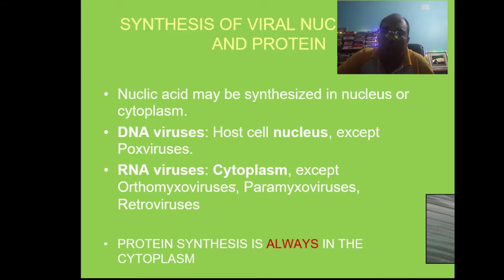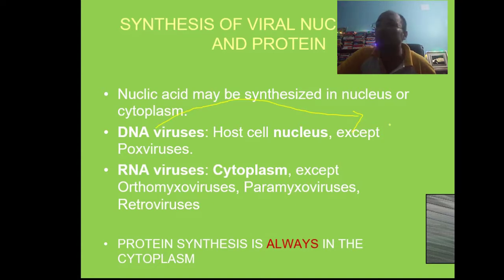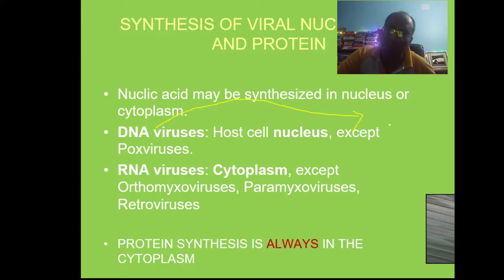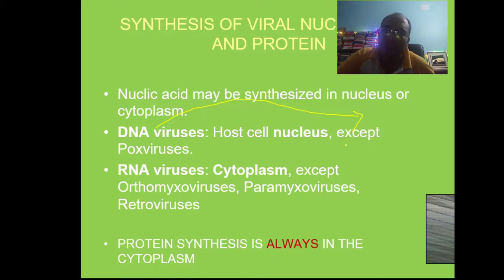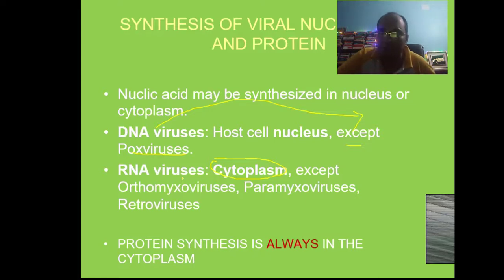Once the DNA or RNA is released, if the virus is a DNA virus, the DNA goes inside the nucleus and uses the host cell's machinery to make more viral DNA. By transcription, viral RNA is formed; by translation, viral proteins are formed. Pox virus is an exception — it replicates in the cytoplasm. For RNA virus replication, most components are also formed in the cytoplasm. Retroviruses such as HIV use reverse transcriptase to form DNA from RNA, and that DNA then goes into the nucleus.